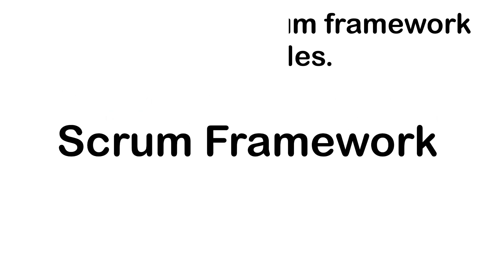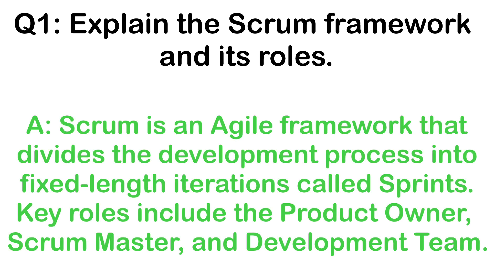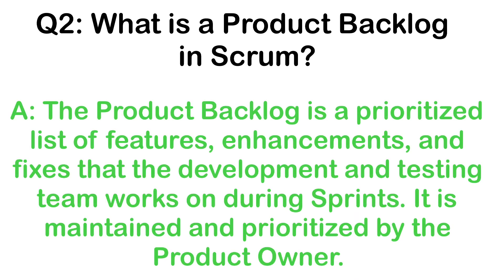Explain the Scrum framework and its roles. Scrum is an Agile framework that divides the development process into fixed-length iterations called sprints. Key roles include the Product Owner, Scrum Master, and Development Team. The Product Backlog is a prioritized list of features, enhancements, and fixes that the development team works on during sprints. It is maintained and prioritized by the Product Owner.